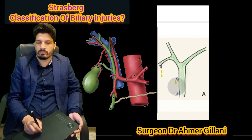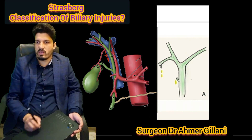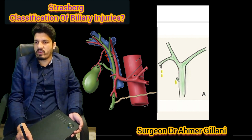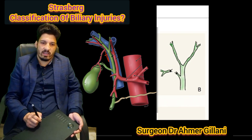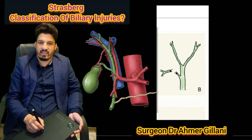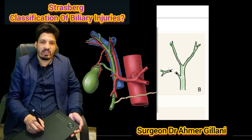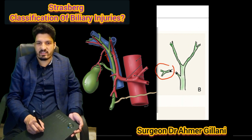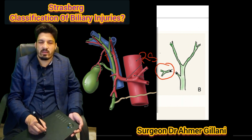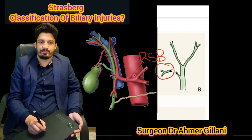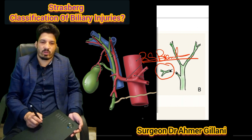What is included in Type B? Type B involves the occlusion of the right segmental branch.